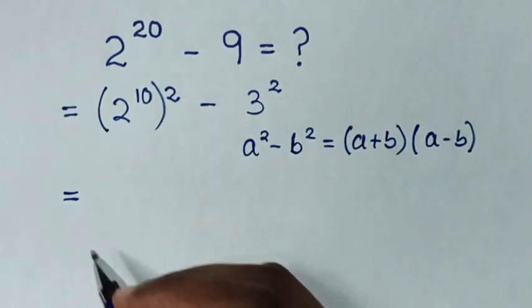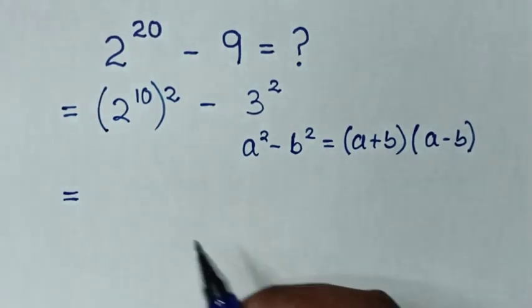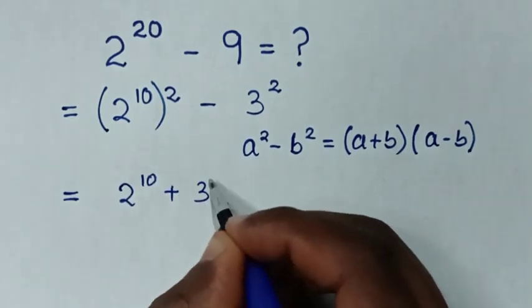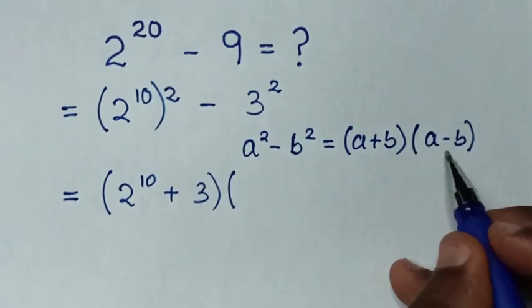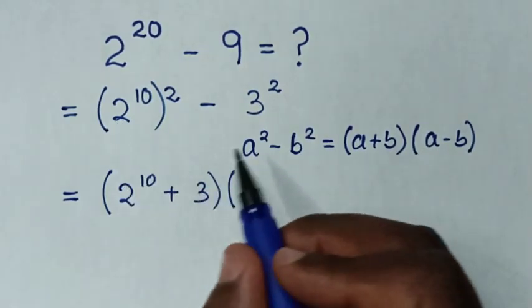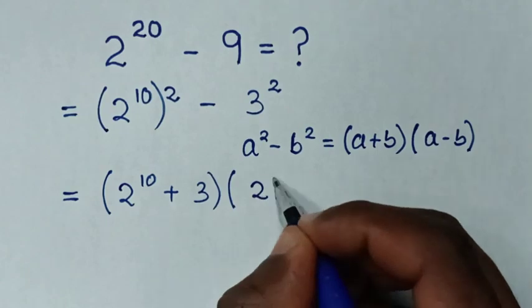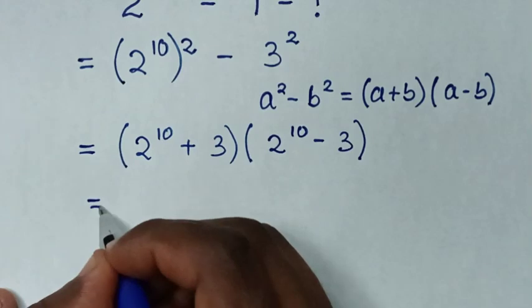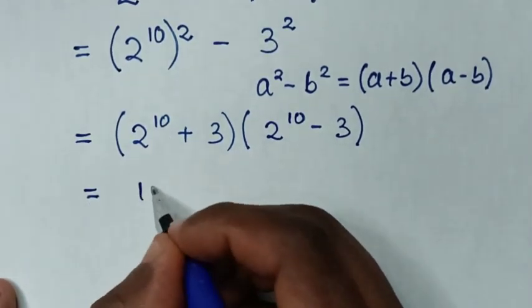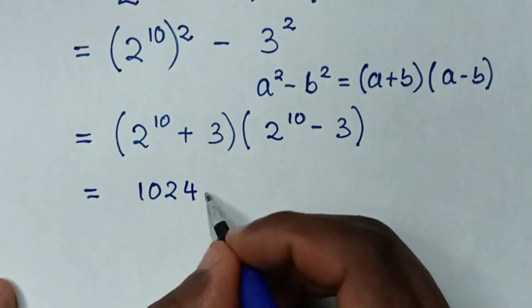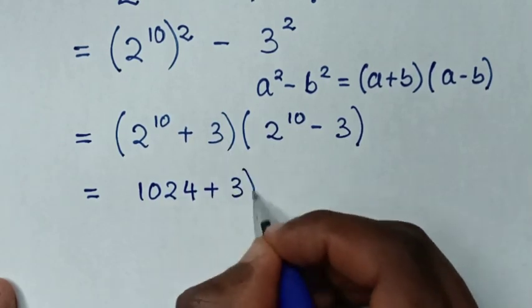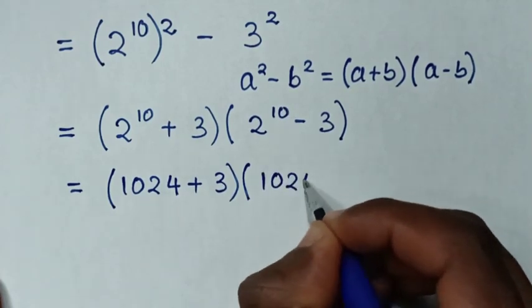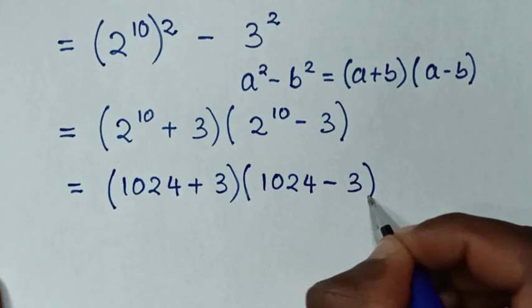It will be equal to (2^10 + 3)(2^10 - 3). Then the next step: 2^10 is 1024, so this becomes (1024 + 3)(1024 - 3).